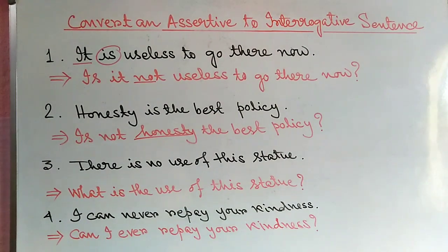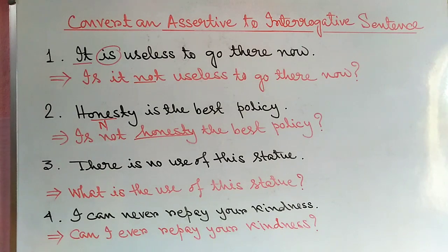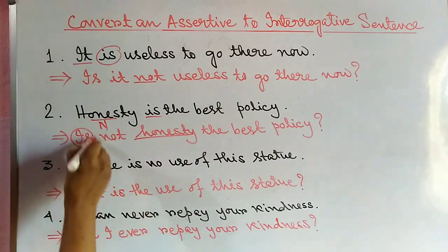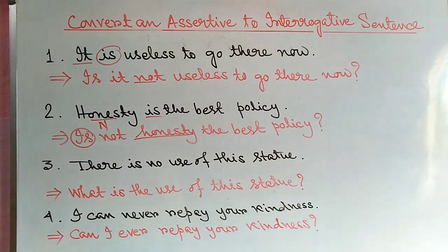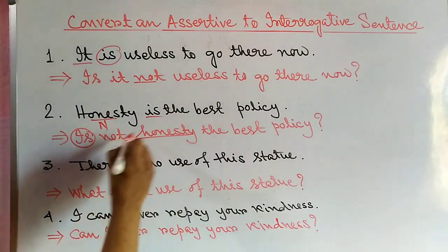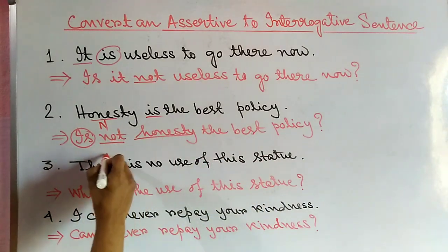Next example: 'Honesty is the best policy.' Here 'honesty' is the subject and a noun. When converting to interrogative, the helping verb comes first. Since the sentence is affirmative with no 'no,' 'not,' or 'never,' our interrogative must be negative: 'Is not honesty the best policy?' Note that 'not' is placed before the noun 'honesty.'